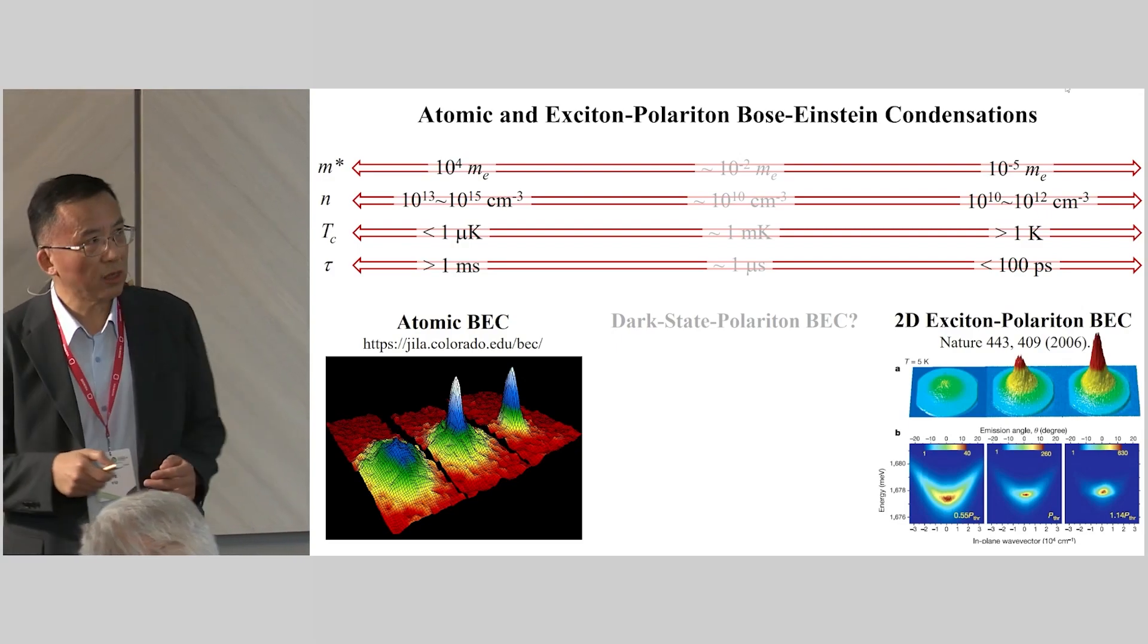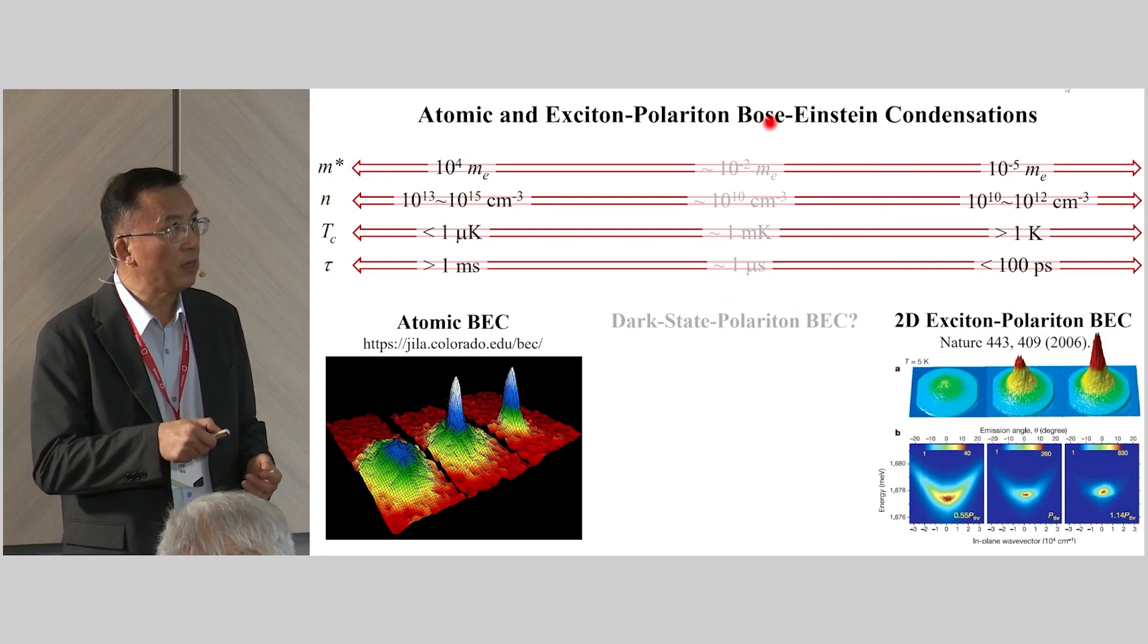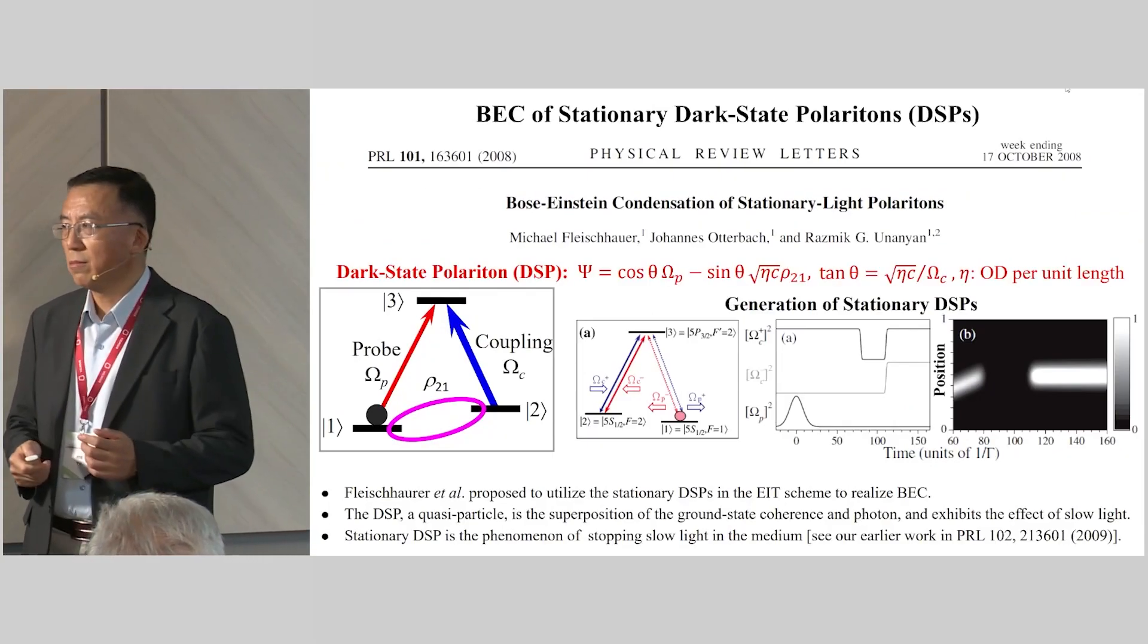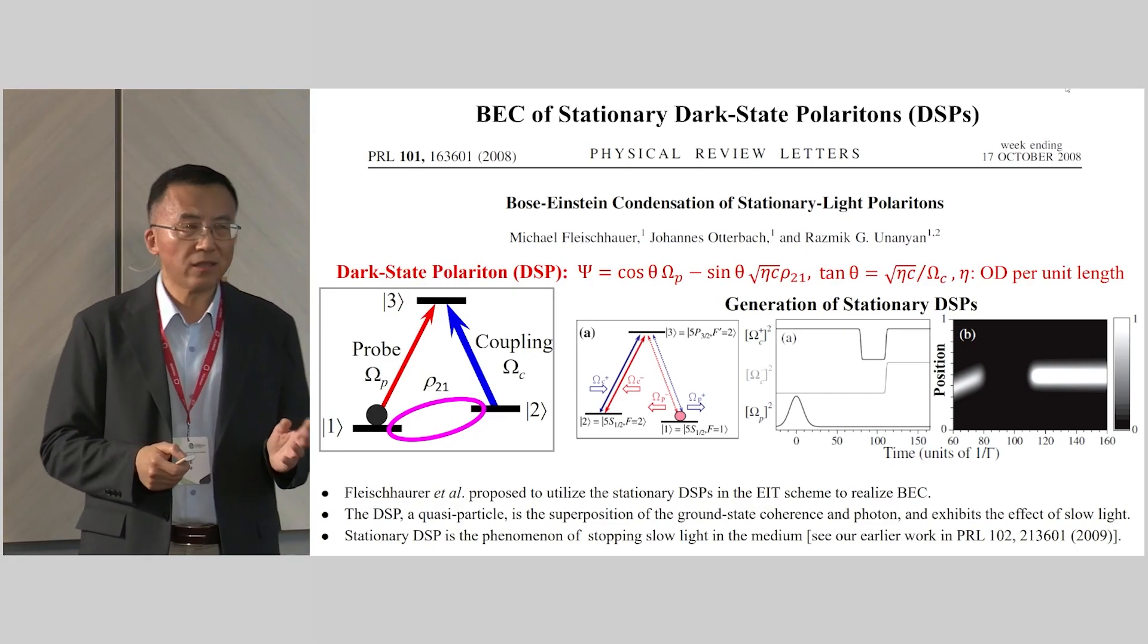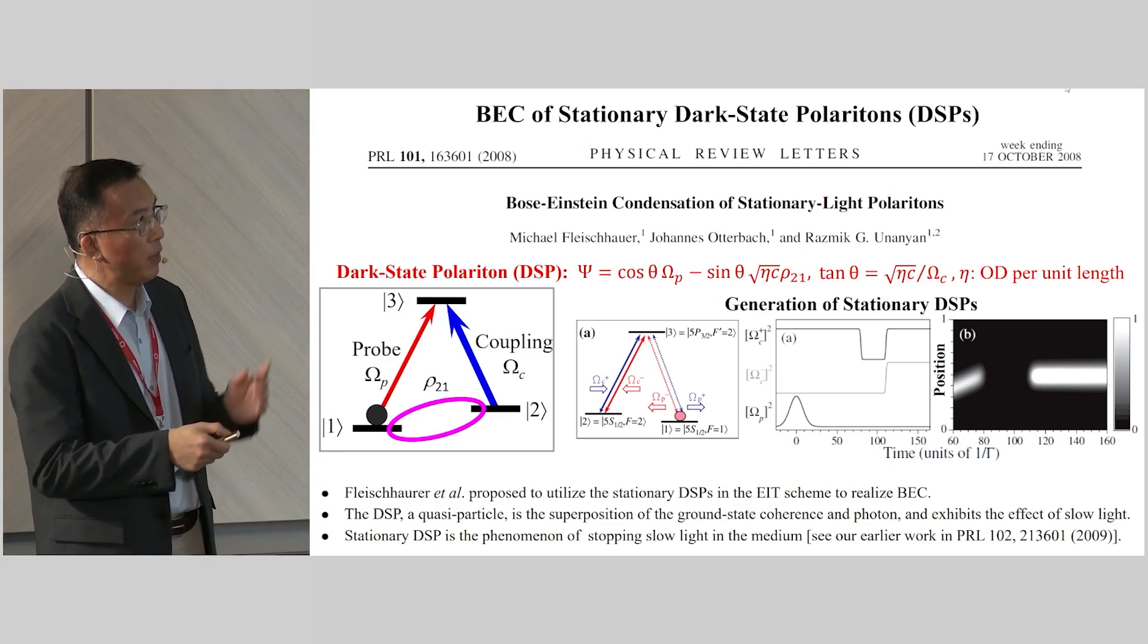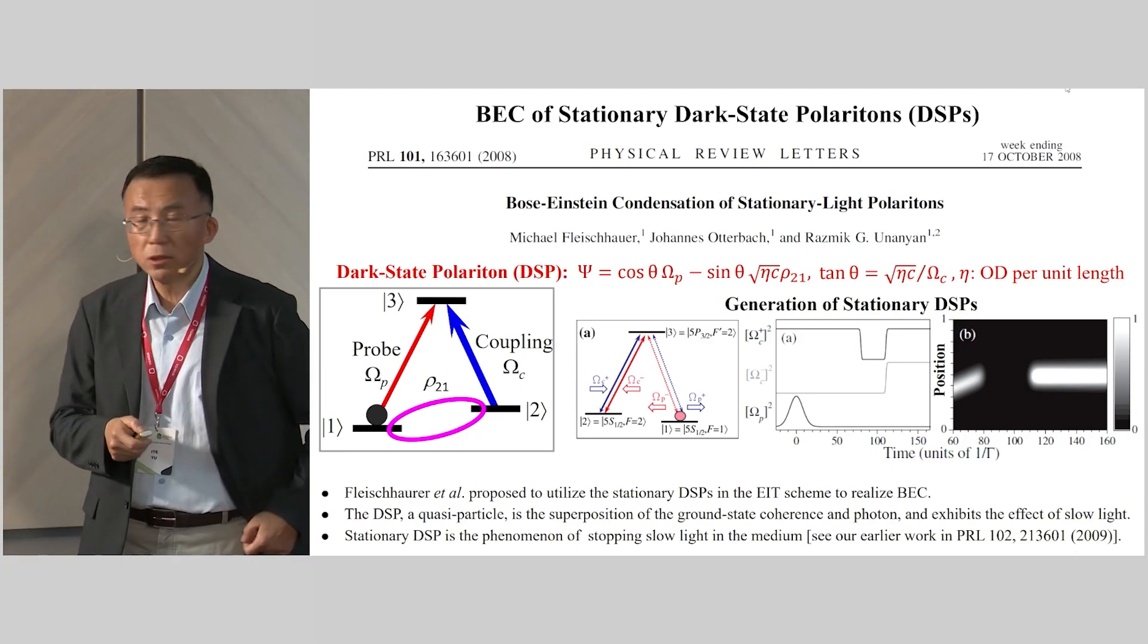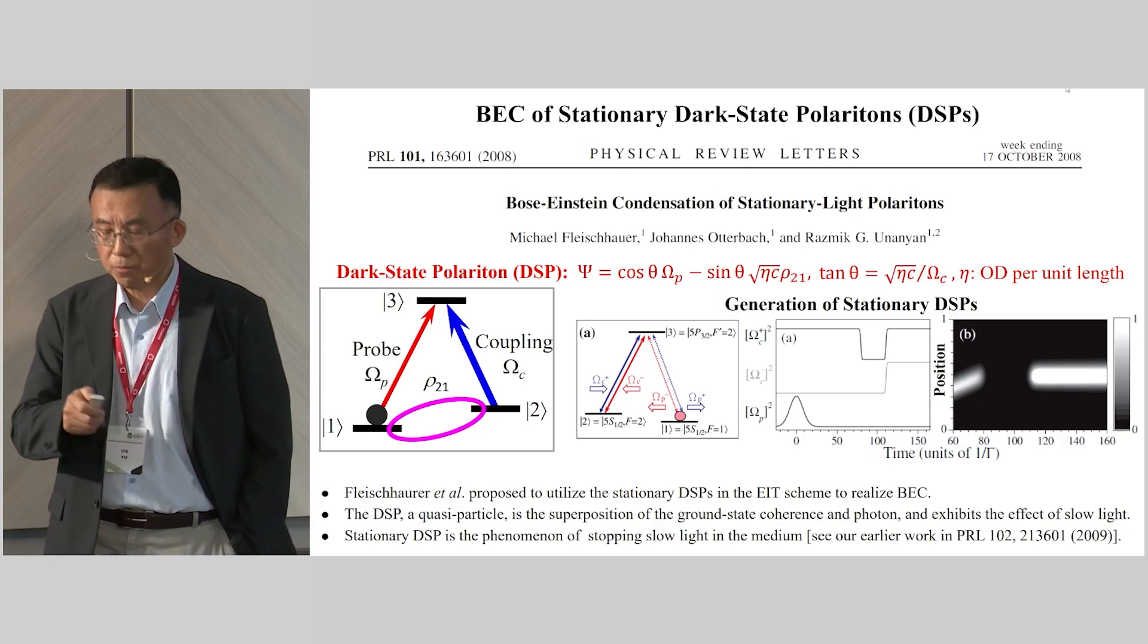On the other hand, the mass of exciton-polariton is relatively light. It's about 10 to minus 5 times the electron mass. So even at a moderate exciton-polariton density, the transition temperature can still be larger than one Kelvin. So our motivation is whether we can create a new type of BEC in between.